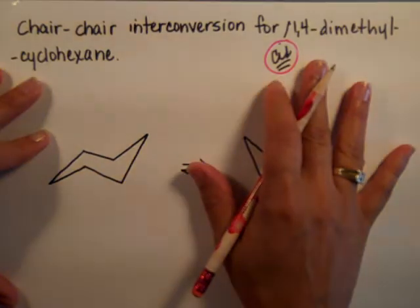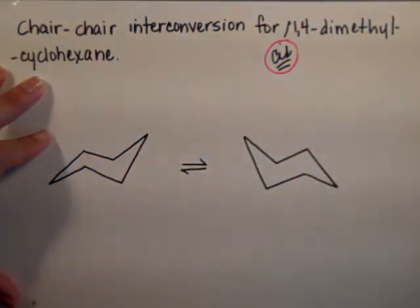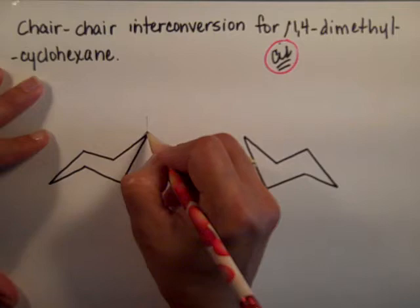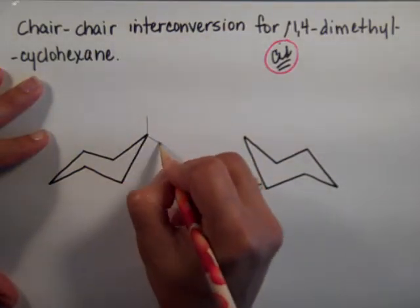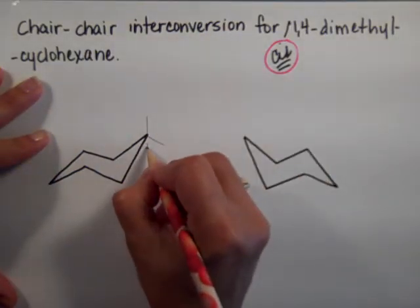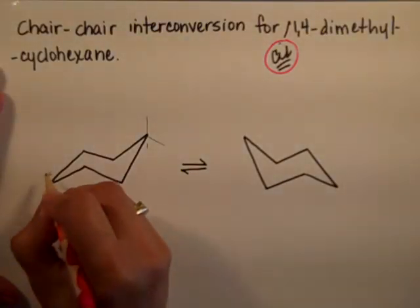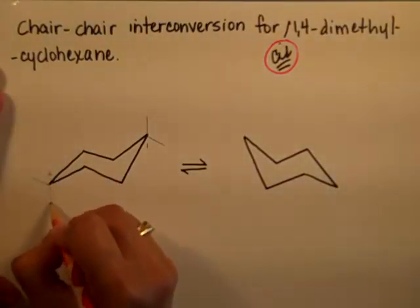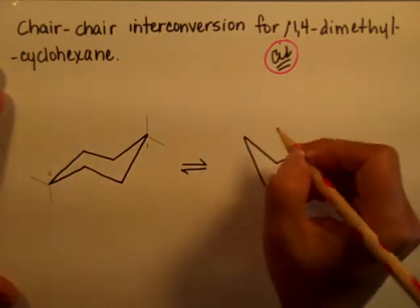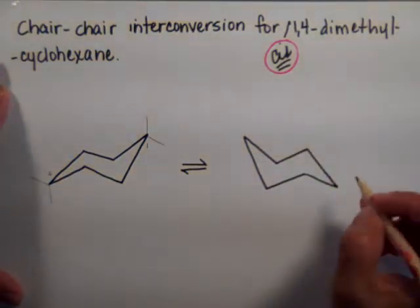So the first thing that I'm going to do, I'm going to go up to my chair and I'm going to mark my axial and equatorial positions on carbon 1 and 4. Let's say this is carbon 1. This one would be 4. I do them in pencil because I'm going to actually just erase them pretty soon.